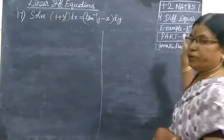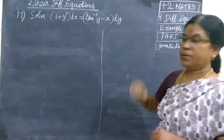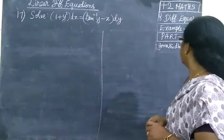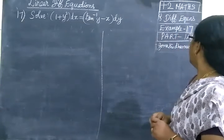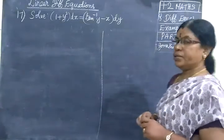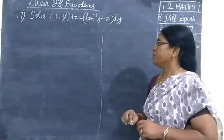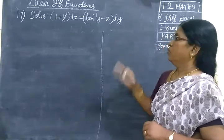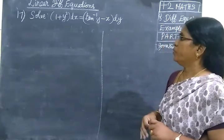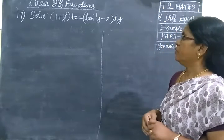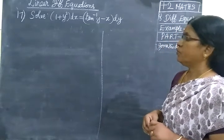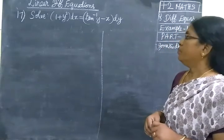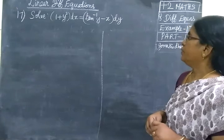Next, we are going to find Part 17, Part 146, Example 17. Solve: 1 plus y squared dx equals tan inverse y minus x, dy.